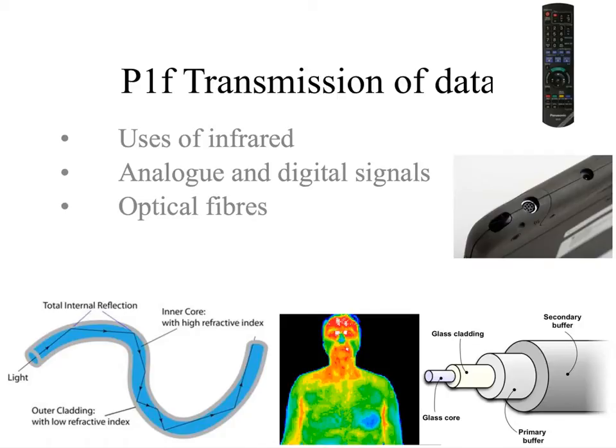This is a tutorial for OCR Gateway GCSE Physics, and this will cover section P1F, Transmission of Data. We're going to look at uses of infrared, analogue and digital signals, and optical fibres.